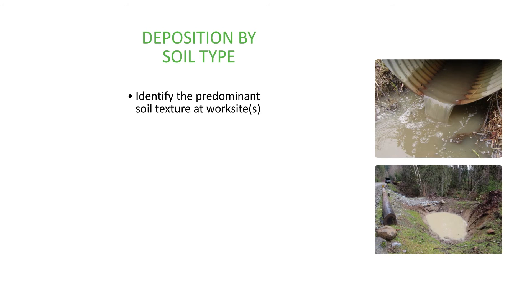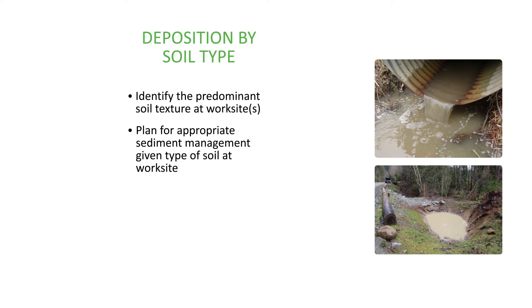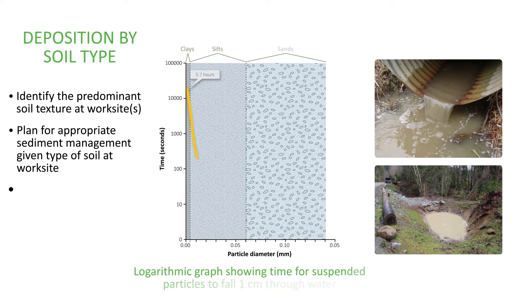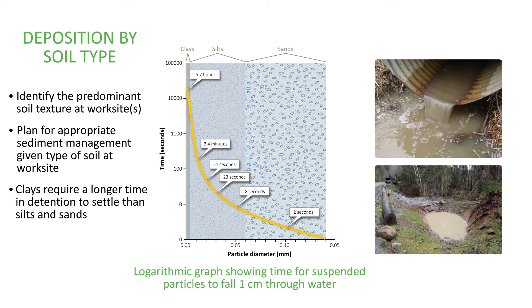Deposition or settlement by soil type. It's important to identify the predominant soil texture at the worksite and to plan for appropriate sediment management given the type of soil present. As shown in the graph, clays require a longer time in detention to settle than silts and sands. Clays can take up to close to six hours to settle one centimeter through water, whereas sands will settle within seconds.